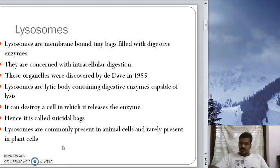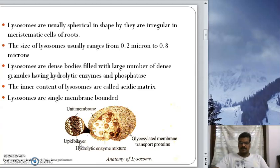Lysosomes are common in animal cells, whereas they are rarely present in plant cells. The size of a lysosome ranges from 0.2 to 0.8 microns.